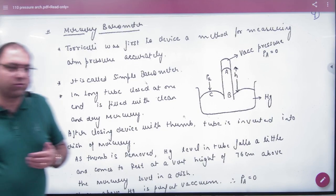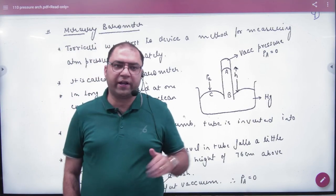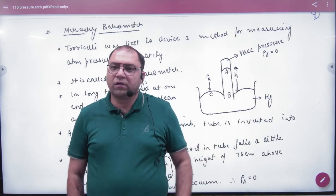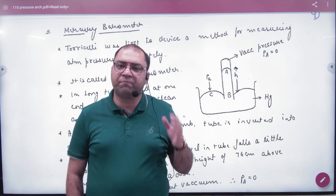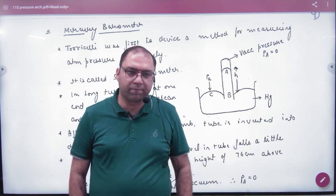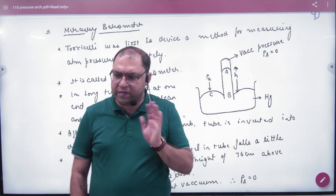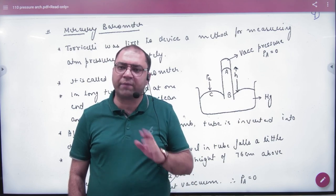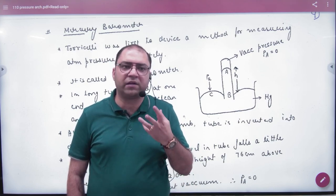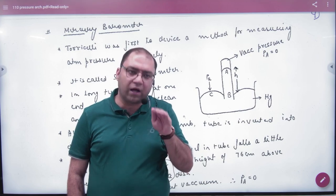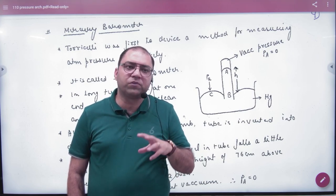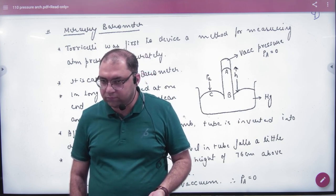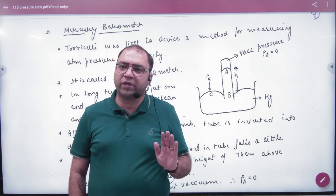You have heard in chemistry that pressure is one atmospheric pressure. You have heard that gas pressure is one atmospheric pressure. Have you heard that pressure is 76 cm of mercury column? Sometimes 76 cm is used. The first question arises: why is the atmospheric pressure?